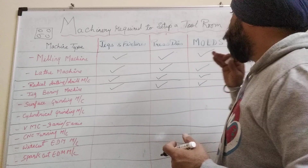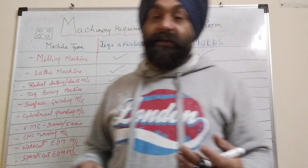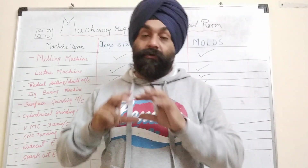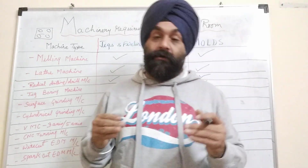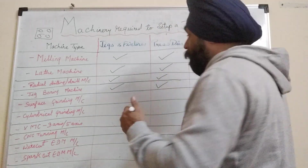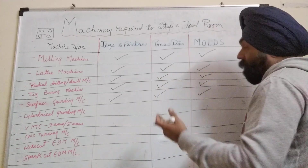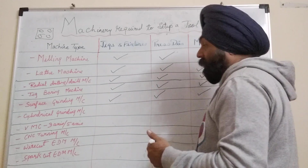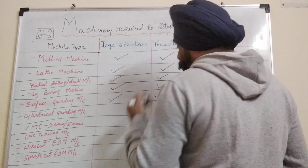Surface grinding is needed after milling to produce a very high-quality surface finish on plates. This is required across all three variants — jigs and fixtures, press dies, and molds — because accuracy and surface finish are critical.